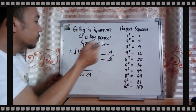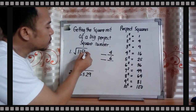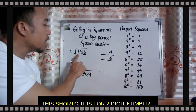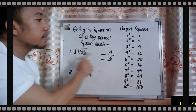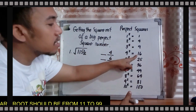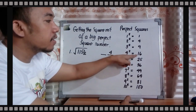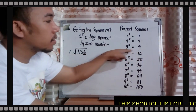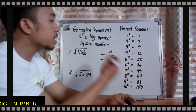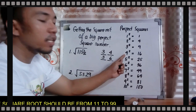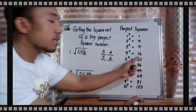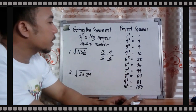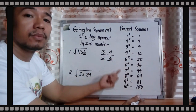Then disregard the last two digits and just use the first two digits: you have 11. Now, 11 is in between 9 and 16, so you should not go past 16. Your tens digit will be 3, because 4 squared is 16, which is already greater than 11.